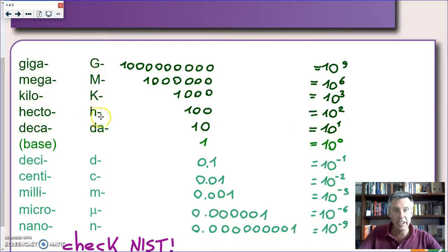Going up still, hecto, or just h, that corresponds to 100, or 10 to the power of 2. This is one prefix we're going to meet a lot of times. The kilo, actually we've met it already, or just k, that corresponds to 1000, or 10 to the power of 3.